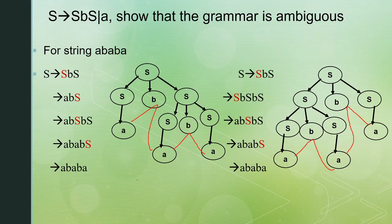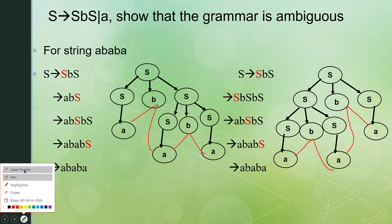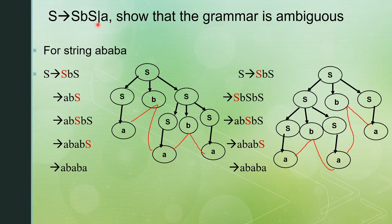The string ABABA can be derived in two different ways, giving two different parse trees. This proves the grammar is ambiguous. This is the ambiguous tree and the ambiguous grammar.